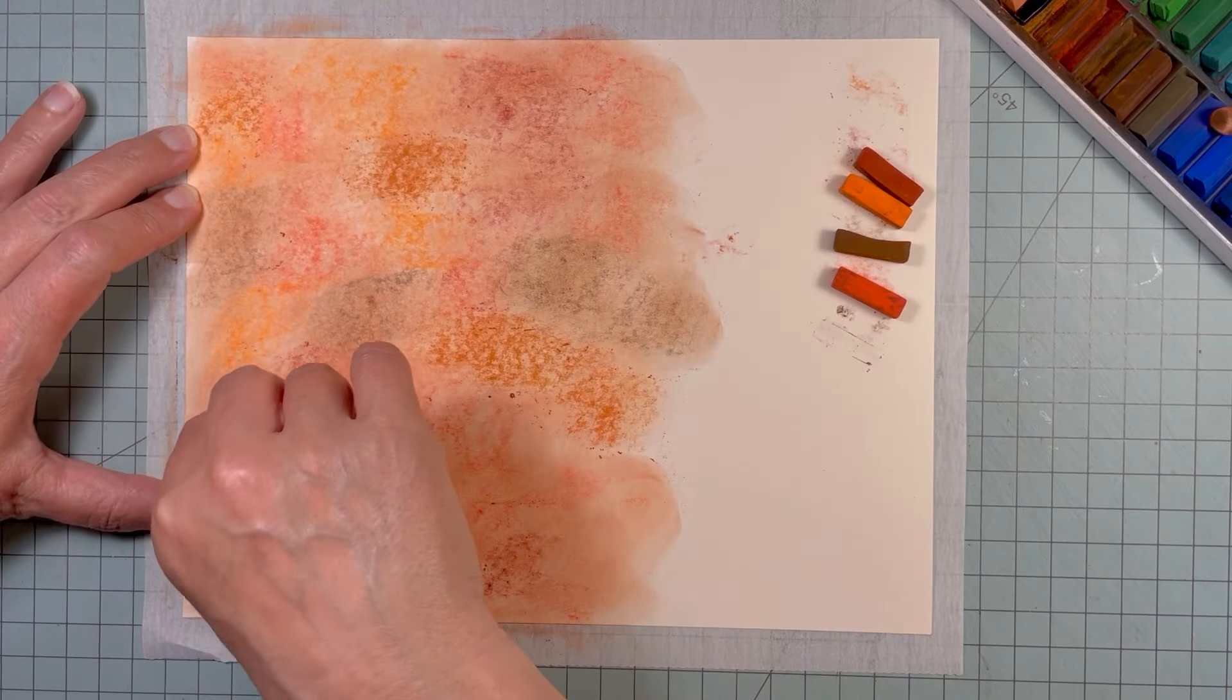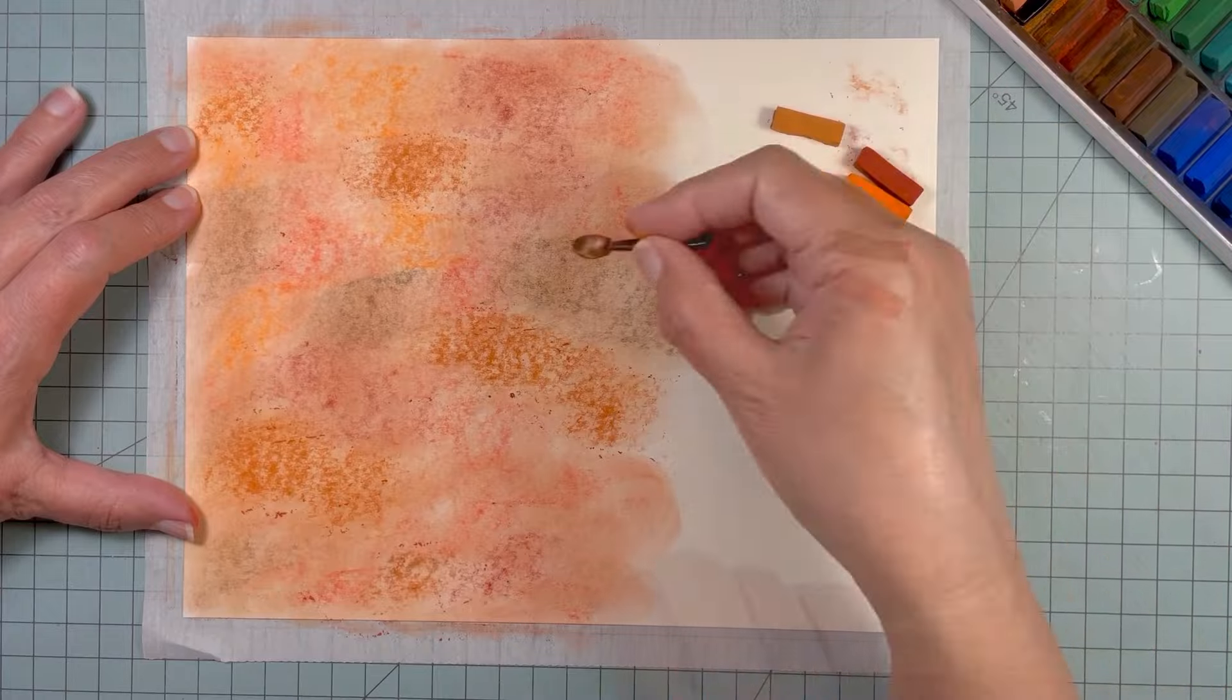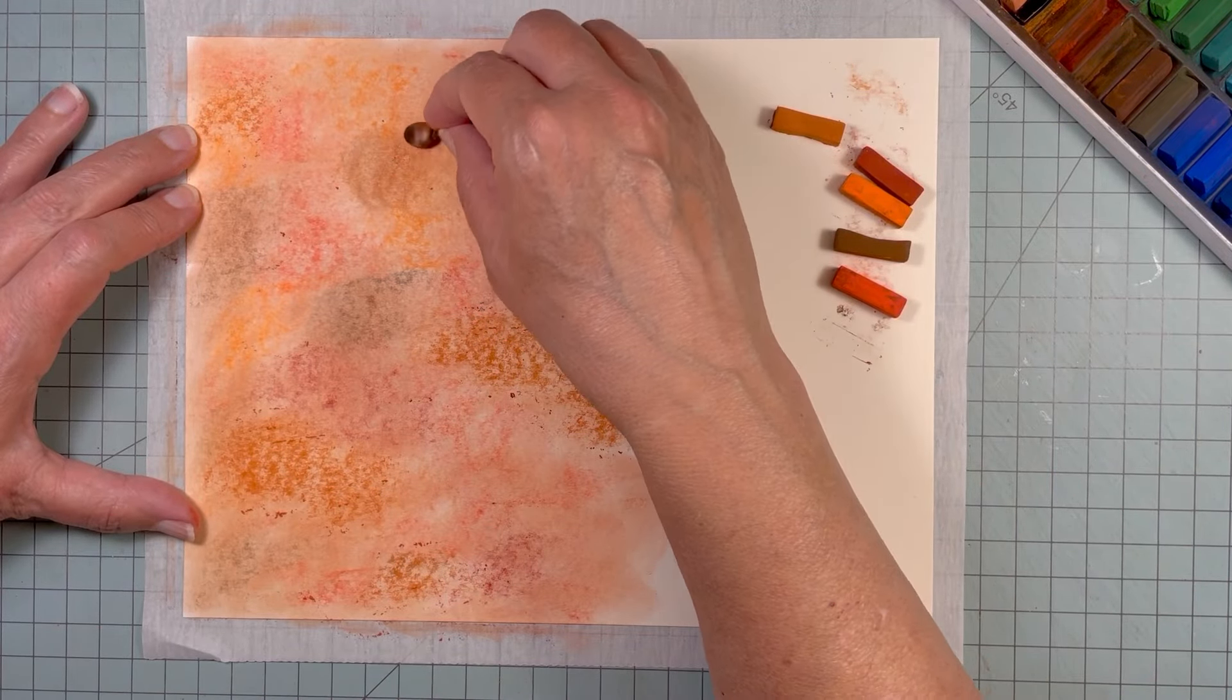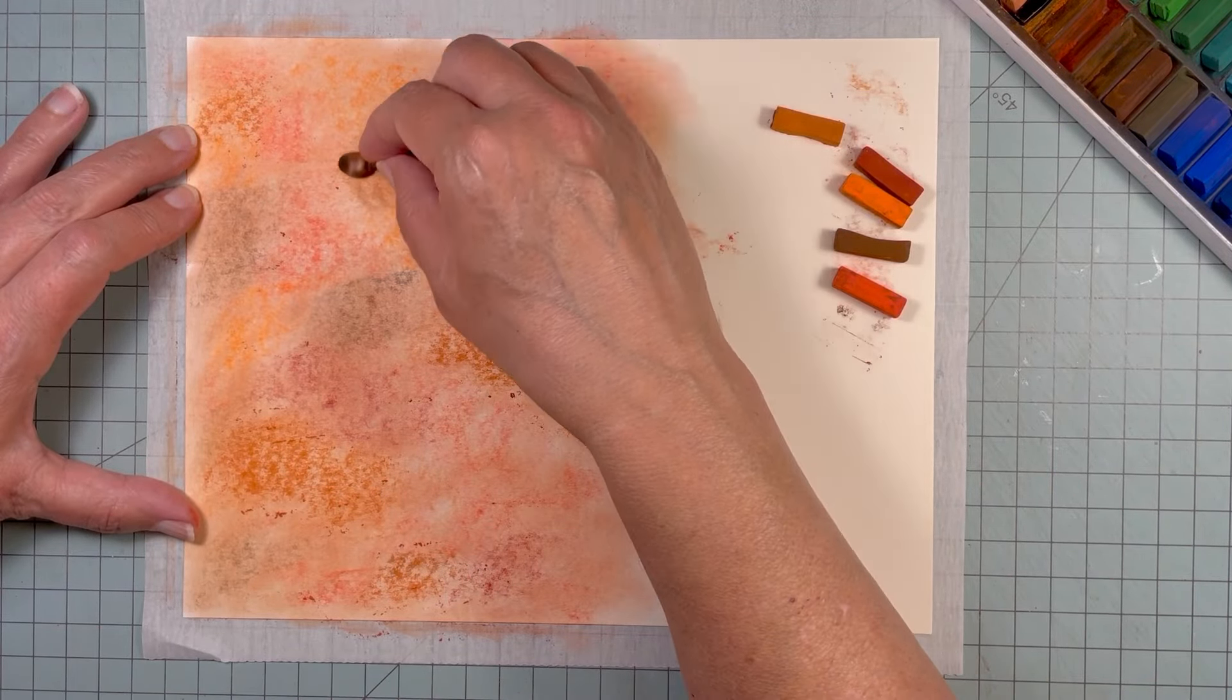And I'm coloring it and blending it with this makeup applicator. But I'm also going to go over it and reapply it to darken it in some areas. So I will be layering it up until it is the depth of color that I want for these terracotta tiles.